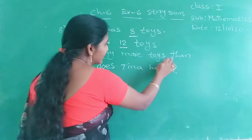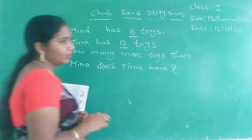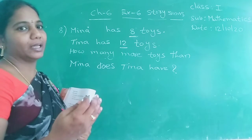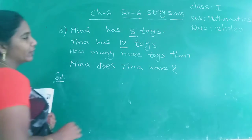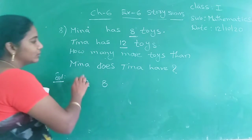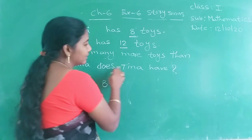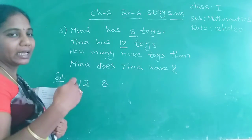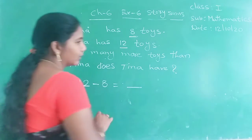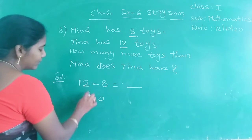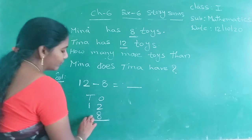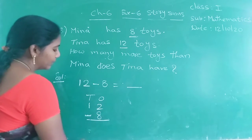Next, how many more toys than Mina does Tina have? What they are asking? Both are having toys — who is having more? What they are asking? So, you have to do subtraction. First, two digits are given: 12. So, tens place and units place. Next, only one digit is given. So write 8 in the units place. Keep minus symbol.